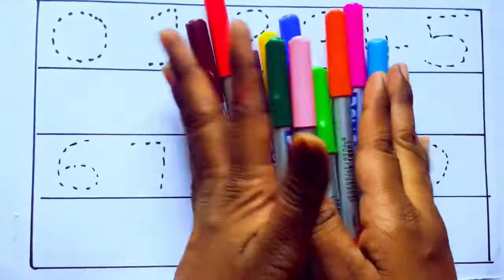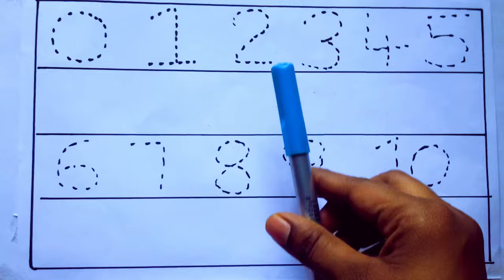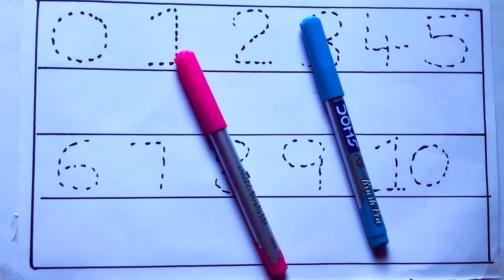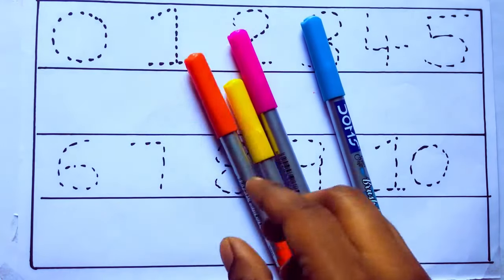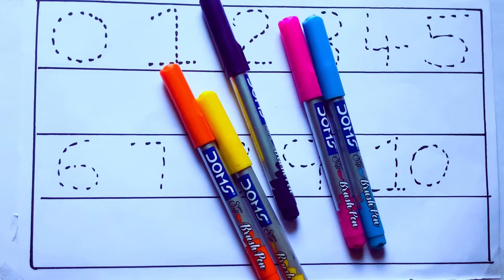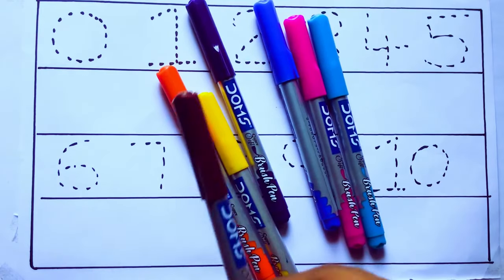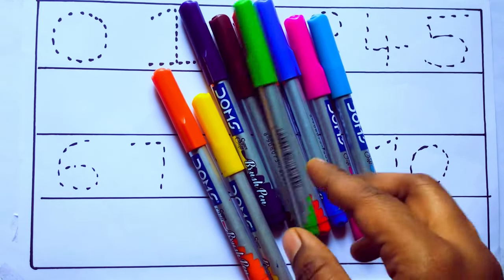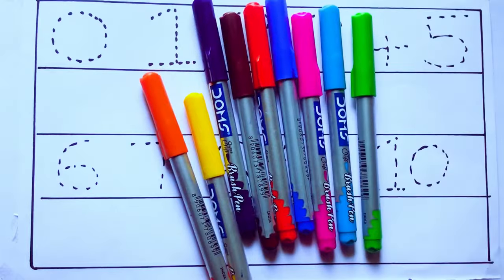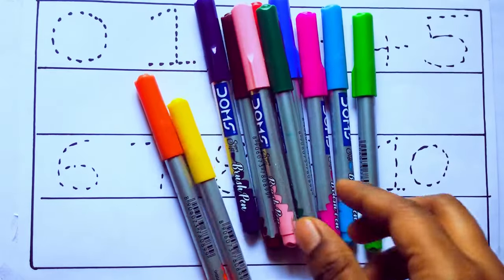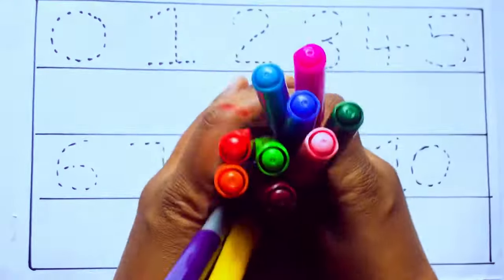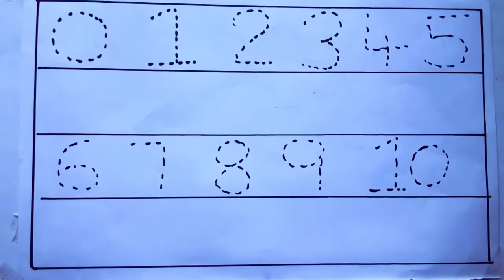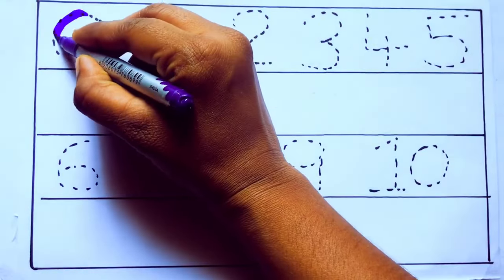Let's learn some colors. These are all the color pencils. Let's learn the names: sky blue color, pink color, yellow color, orange color, violet color, blue color, brown color, red color, green color, blue green color, and pink color. Let's draw numbers.